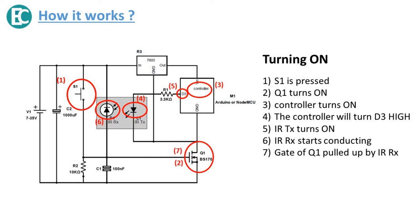Hence now, though switch S1 is unpressed, the gate of Q1 will be pulled up by the IR receiver. Now all control will be done by the controller. In this way, this circuit turns on the controller.